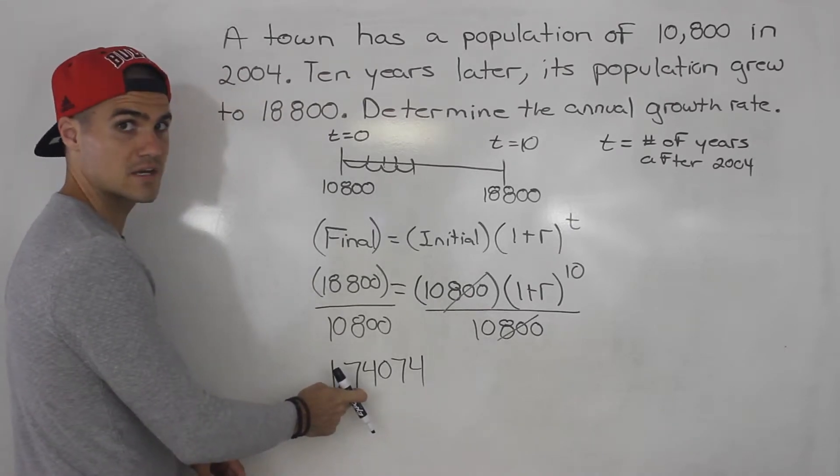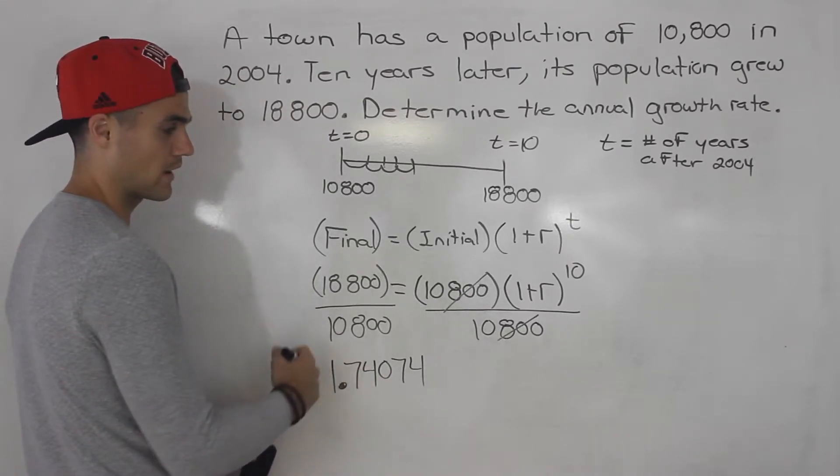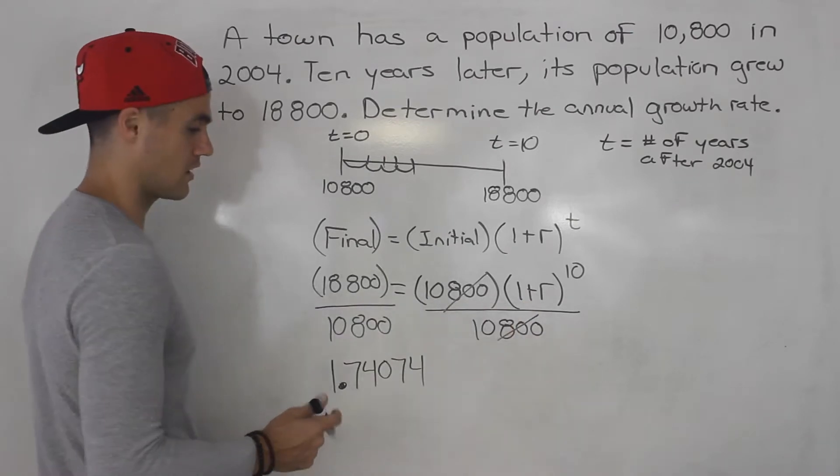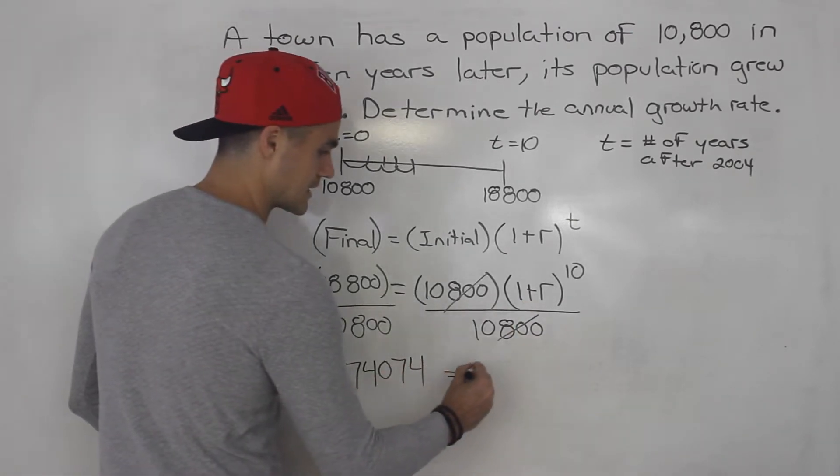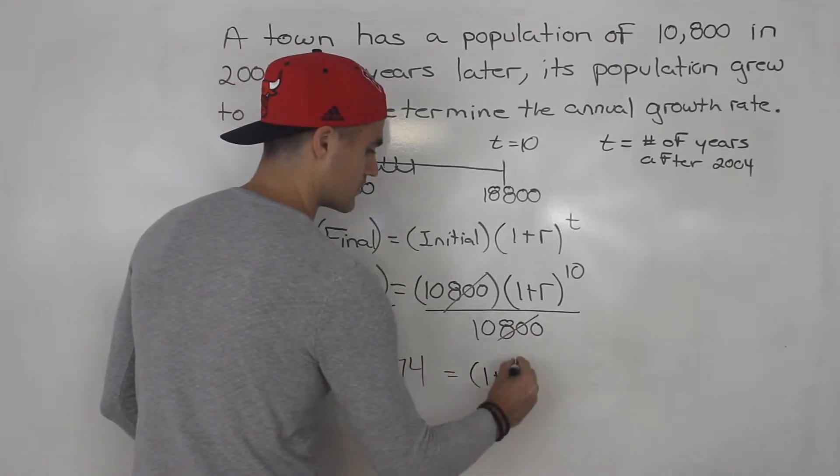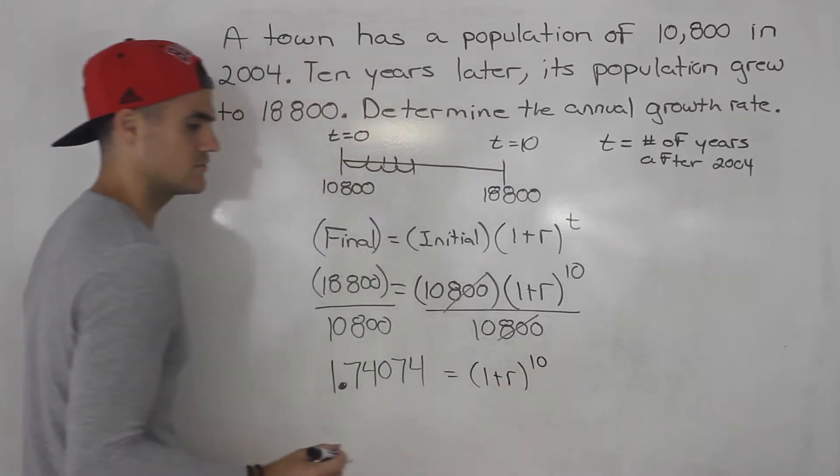I would maybe round this number here to five decimal places, don't round too much because then it might throw your final answer off. And this is going to equal (1 plus r) to the power of 10.